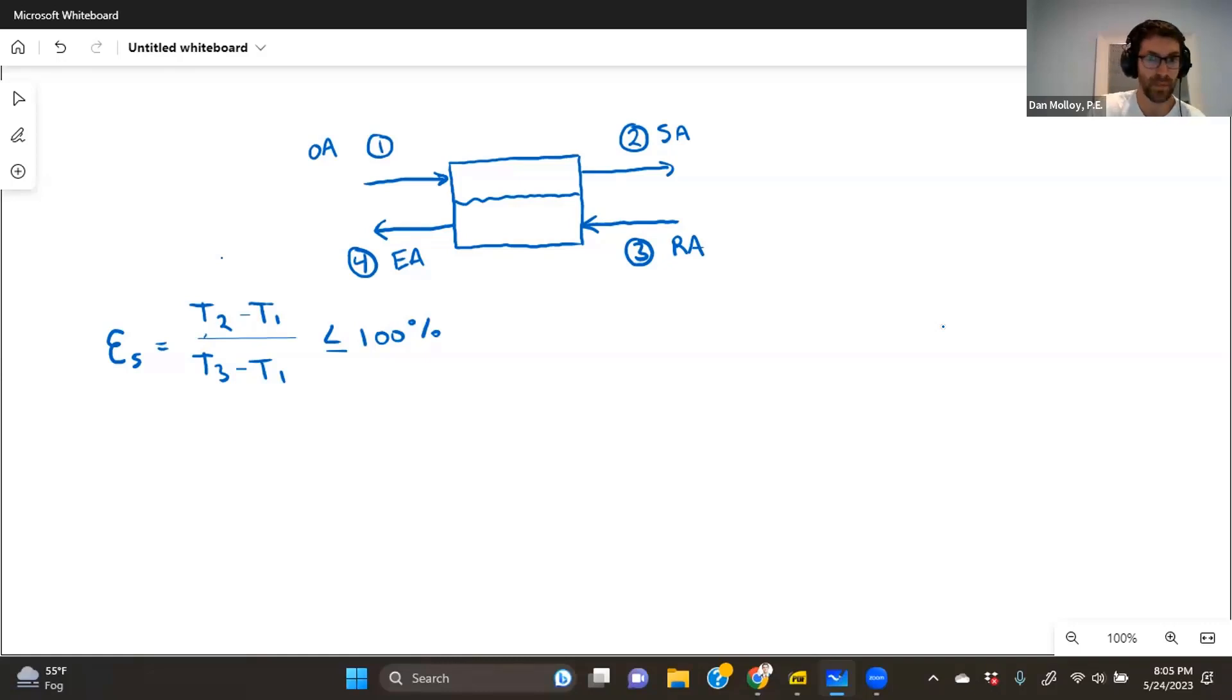So let's use the same picture. Nothing's changing. The only thing that's changing is that instead of only sensible heat going across the boundary Q dot S, we have also latent heat crossing the boundary, so moisture. And if that's the case, then it becomes possible for us to calculate the total effectiveness.